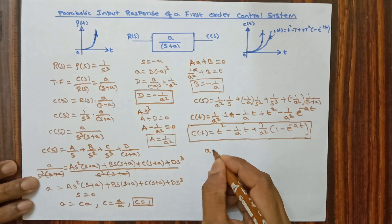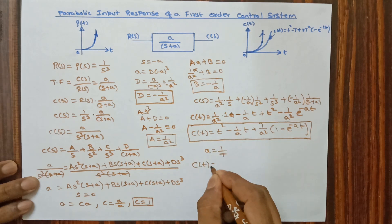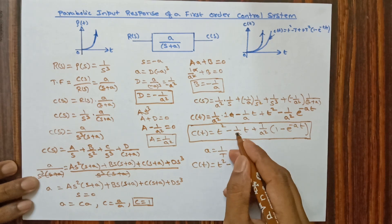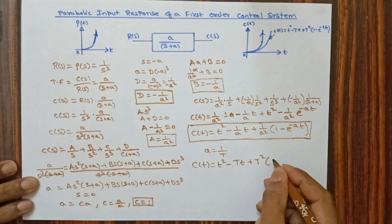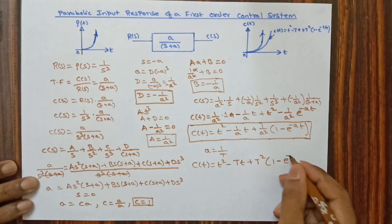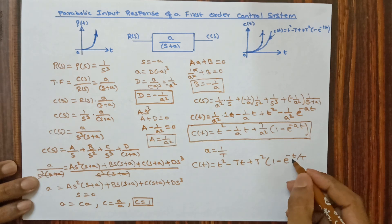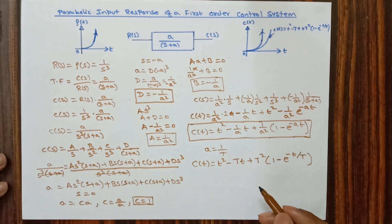By substituting a = 1/T, we get c(t) = t² - T·t + T²·(1 - e^(-t/T)). This is the output equation for parabolic input. Hope you understood this video — for such videos, like and subscribe to my channel. Thank you.